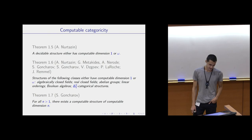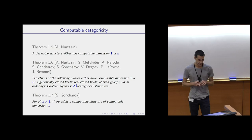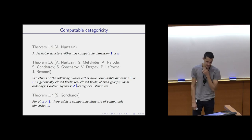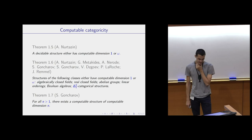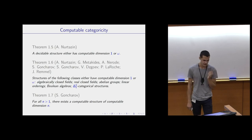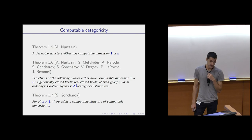A very famous example of a computably categorical structure is the countable dense linear order without endpoints. Though natural numbers with their usual ordering are not computably categorical. Some examples were constructed by Froelich, Shefferson, and Maltsev in the theories of fields and abelian groups. Then by different authors were constructed examples of theories whose models are either of computable dimension one or omega — those are algebraically closed fields, real closed fields, abelian groups, linear orderings, and boolean algebras. At this point a natural question arises: do there exist computable models with finite computable dimension? Goncharov proved that for all finite N, there exists a computable structure of computable dimension N.